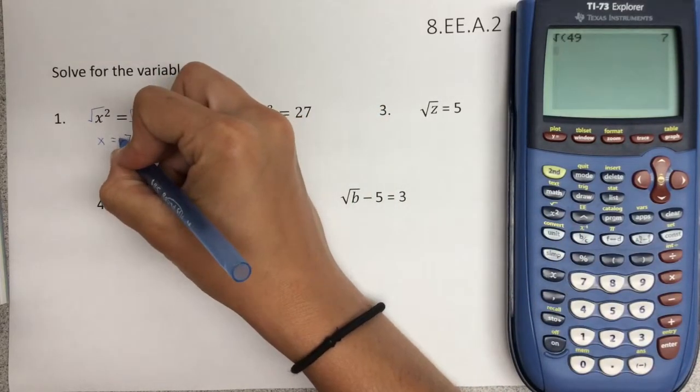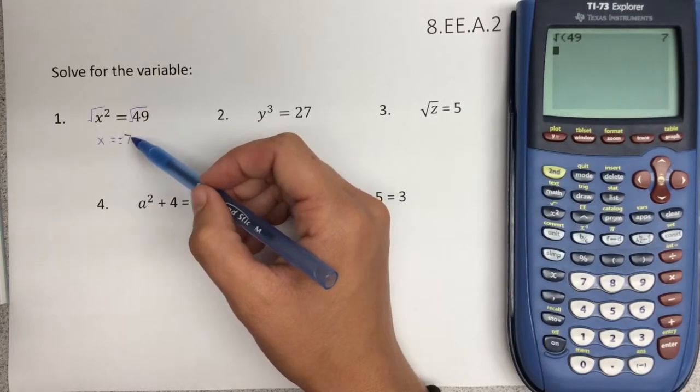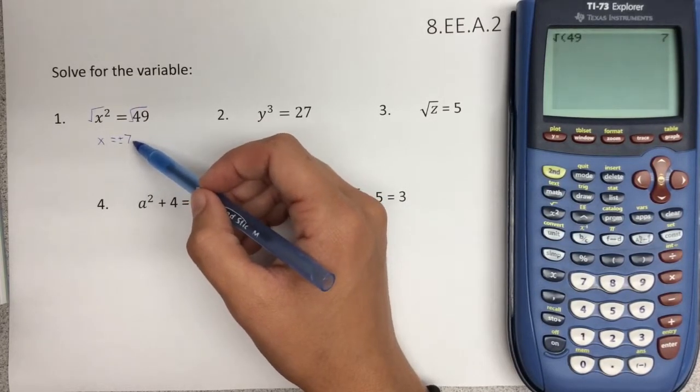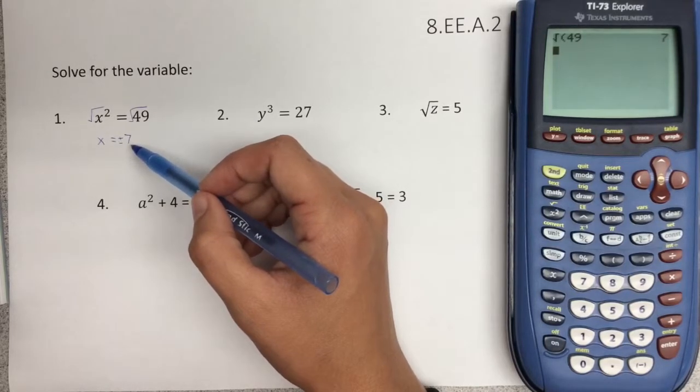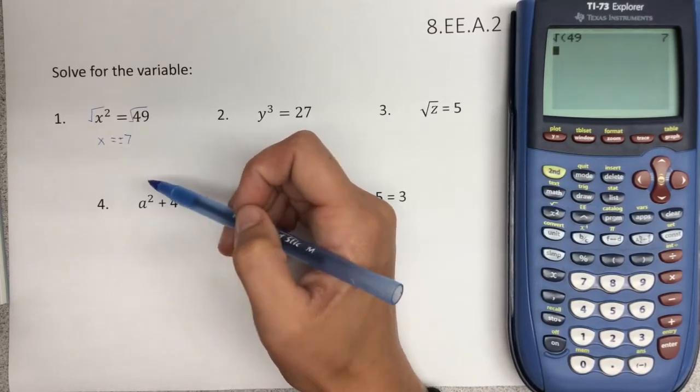Technically, this is plus or minus 7, because we know that positive 7 times positive 7 is 49, and also negative 7 times negative 7 equals 49. But for the purpose of 8th grade math in our content, we will almost always just use exclusively positive 7. So we'll usually just put x equals 7.